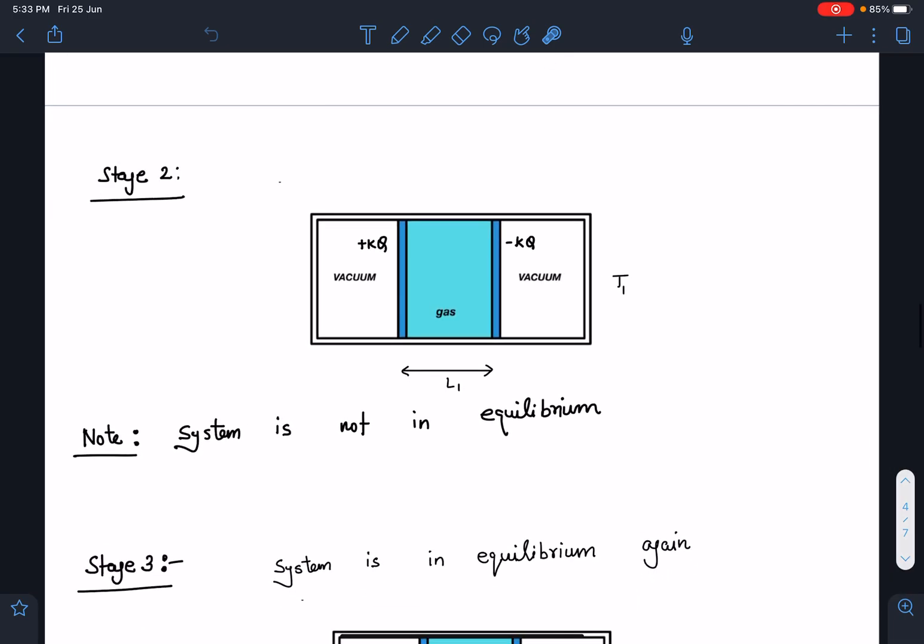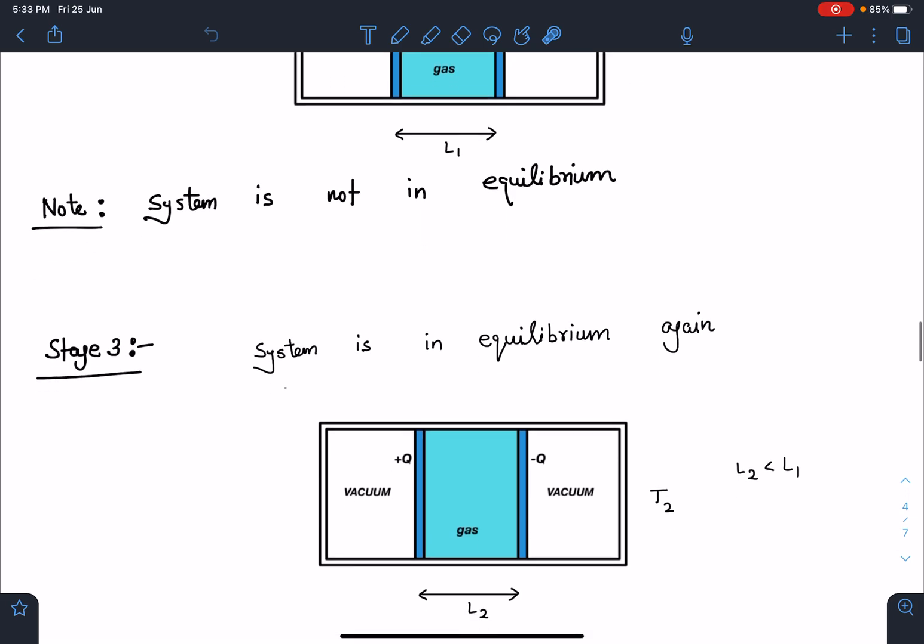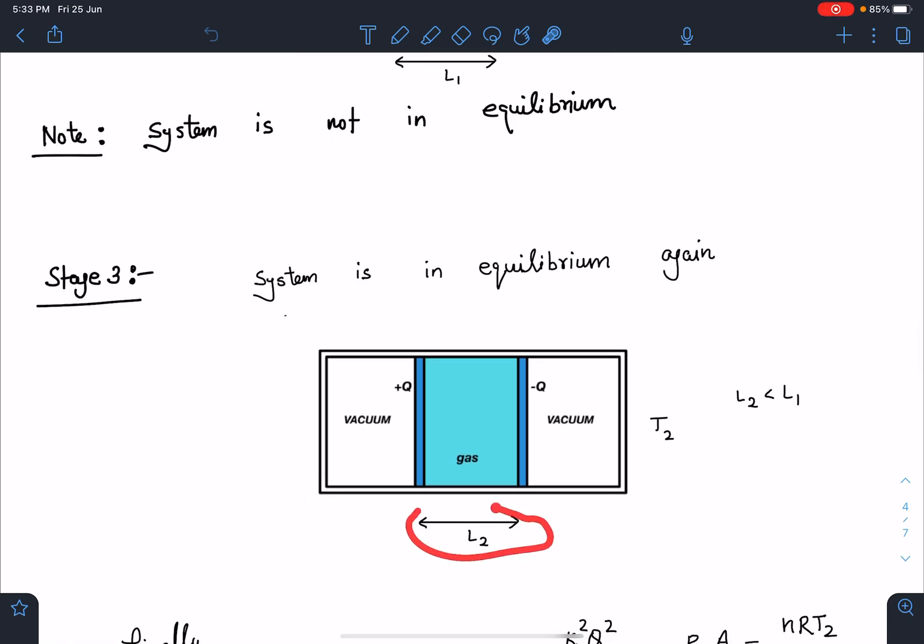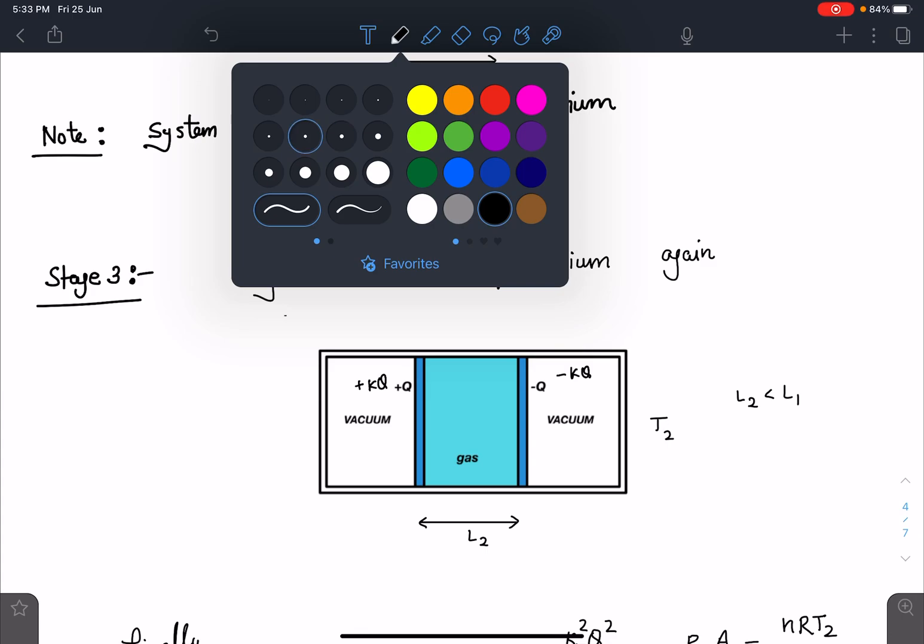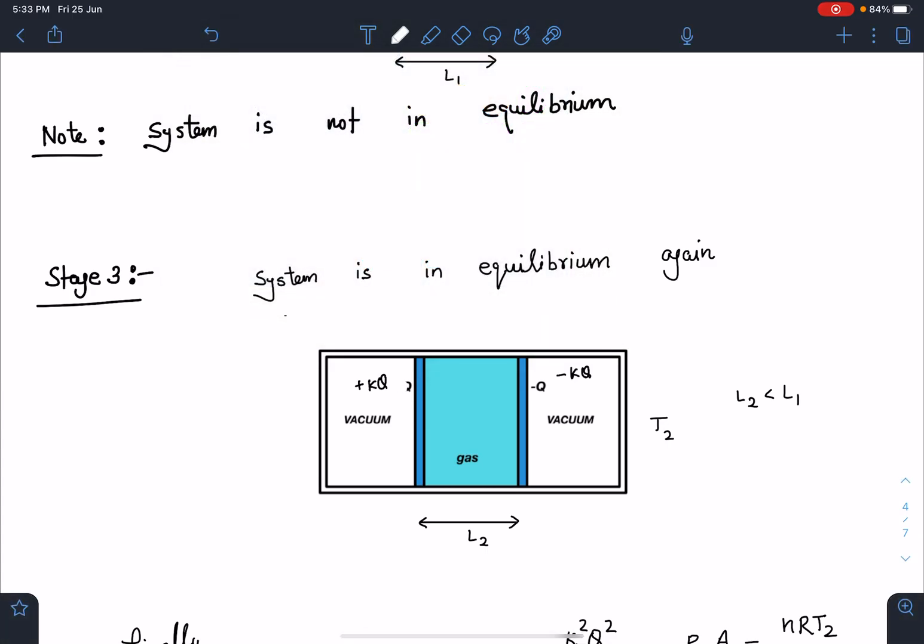Now Stage 3: finally I will say the new distance has come L2 and temperature has changed to T2 and of course this L2 is going to be less than L1 and this charge has become k times of this. Actually this charge I should have written it is KQ. This charge is KQ now plus KQ and this charge is minus KQ here. I hope this part is clear to you. So this is not Q and minus Q it is instead plus KQ and minus KQ.